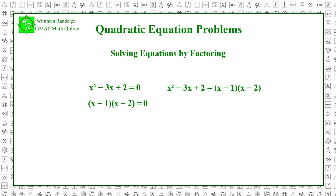This factored polynomial is now the product of two numbers, and the product of any two numbers is 0 if and only if one or both of them are 0. Therefore, we can set each factor to 0, solve for x, and obtain the two solutions, or roots, of this equation. x minus 1 equals 0, so x equals 1. Or, x minus 2 equals 0, and x equals 2.